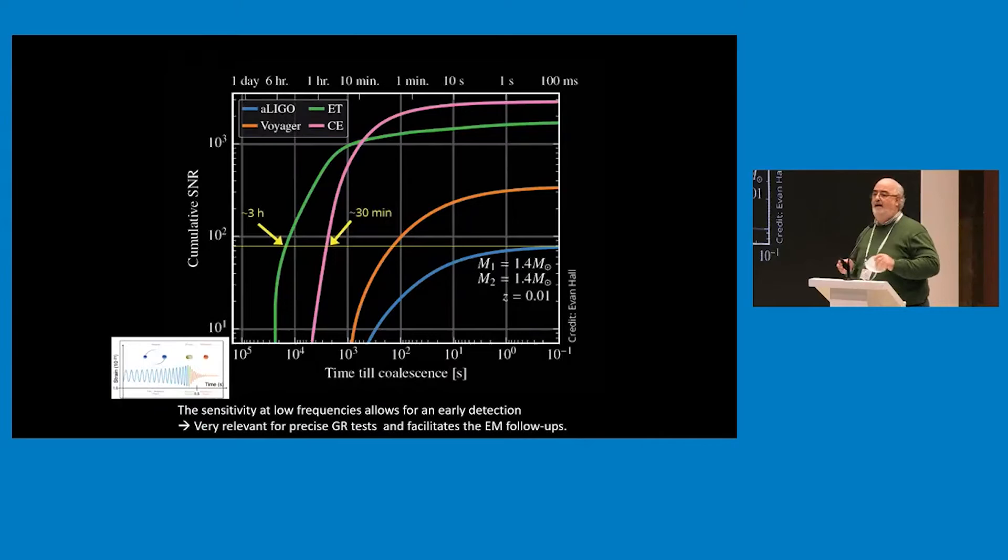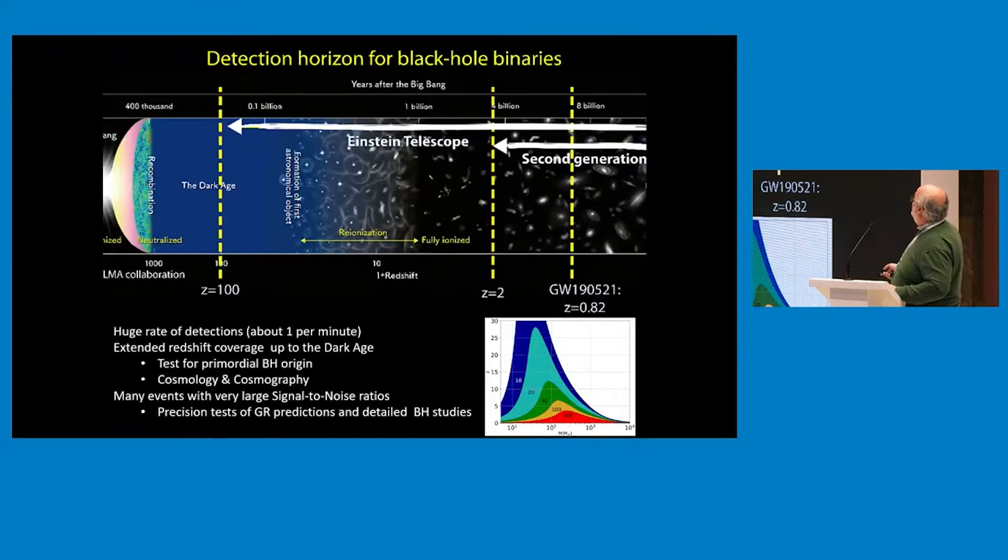Why extending to low frequencies is so important? One reason is that if you go to very low frequencies, you see the signal very early on, not just when things are going to become very violent. You can see things three hours before happening in the merging. This will allow first to do a very precise test of general relativity where you have a long signal, but also to facilitate electromagnetic follow-ups because with three hours' time you are going to tell the people in three hours something is going to happen.